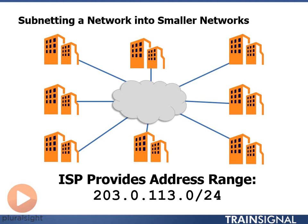What we've done here is our internet service provider — we're a large or medium size company — is going to provide us a range of addresses: 203.0.113.0/24. We can do whatever we want with that IP space as long as we keep the network portion the same. In our particular environment we have eight facilities scattered throughout a geographical area. These eight different facilities each need their own network address assigned to it. Since our ISP only gave us one network address, we need to break that up into eight network addresses.